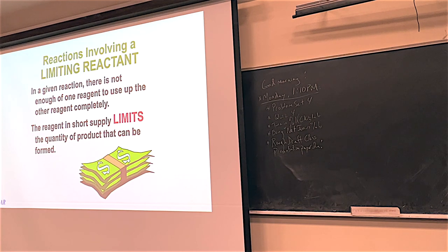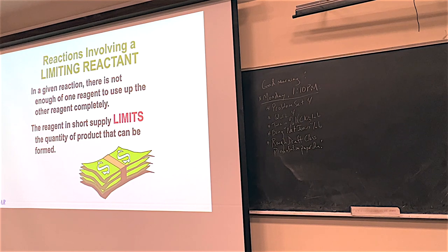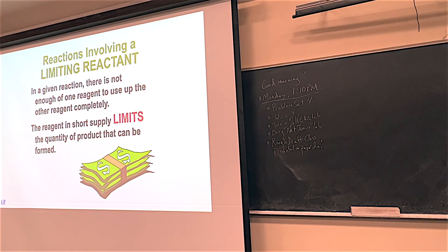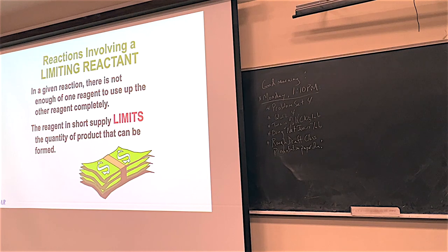On Monday we looked at the so-called grams-to-moles-to-moles-to-grams dance. We're going to use that a lot to figure out how many grams of product we get by putting in so many grams of reactant—or, if the boss says she needs 37 grams of product, how much reactant to put in. But there's one more thing we need to talk about: the limiting reactant.